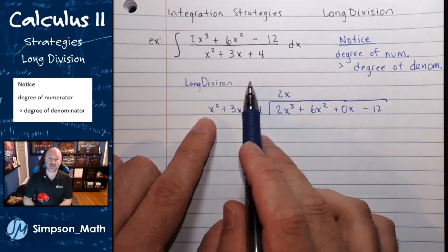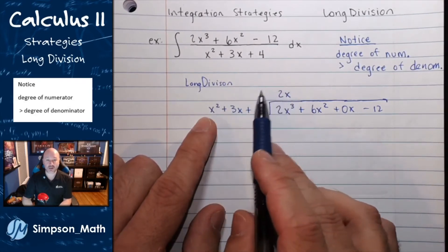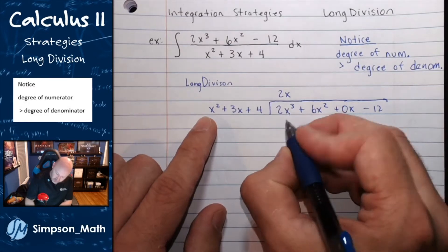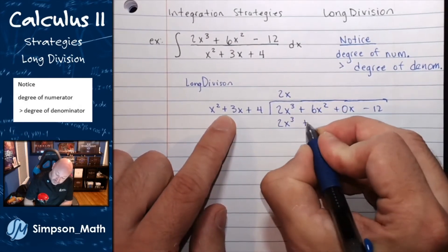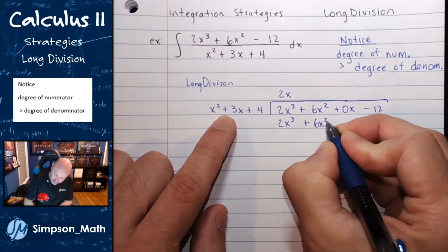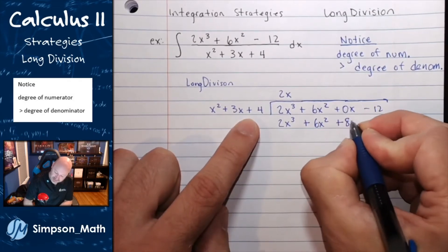Now, I take that, and I distribute, or I multiply by all of my divisor. So, I have 2x cubed, plus 6x squared, plus 8x.